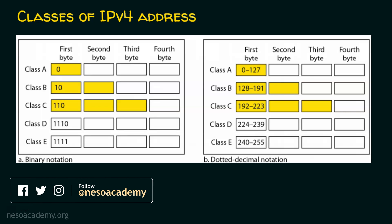Basically, we have five classes of IPv4 addresses: Class A, Class B, Class C, Class D, and Class E. We know that IPv4 addresses can be represented in two ways — either in binary notation or in dotted decimal notation.